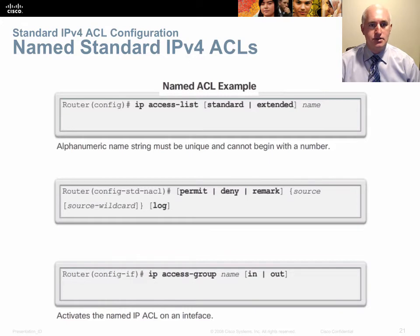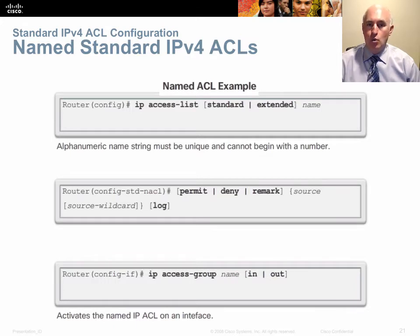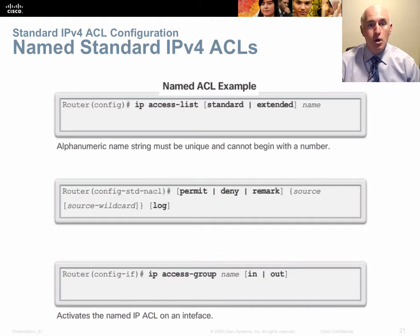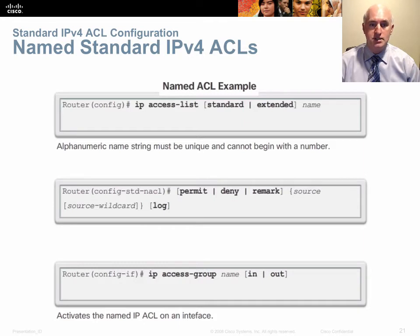Named ACLs are a little different. You type 'ip access-list' and then specify 'standard' or 'extended', since there's no number to indicate that. With numbered ACLs, 1–99 indicate standard and 100–199 indicate extended. Then give the list a name — no spaces, must start with an alpha character, all uppercase recommended. You then have three choices: permit, deny, or remark statements.